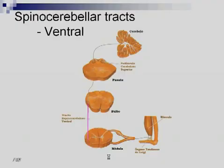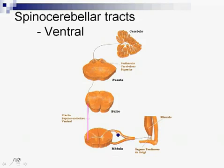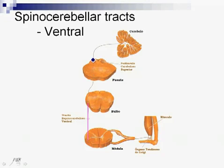Now we will speak about the spinocerebellar tracts, of which there are three. The ventral spinocerebellar tract brings information from Golgi tendon organs. The first neuron enters the gray matter of the spinal cord and synapses with the second neuron, which is situated in the dorsal nucleus inside the spinal cord. The second neuron crosses sides and ascends in the ventral spinocerebellar tract until the superior cerebellar peduncle, introducing itself to the contralateral side of the cerebellum. However, some of these fibers decussate again back to the homolateral side, so the ventral spinocerebellar tract sends fibers to both sides of the cerebellum.